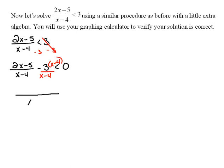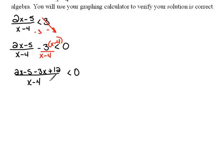Now that the denominators are the same, then we can work with the numerators. So that would be 2x minus 5 minus 3x plus 12 over x minus 4, because all I did was distribute my negative 3 is less than 0. And now we can clean this up a bit.